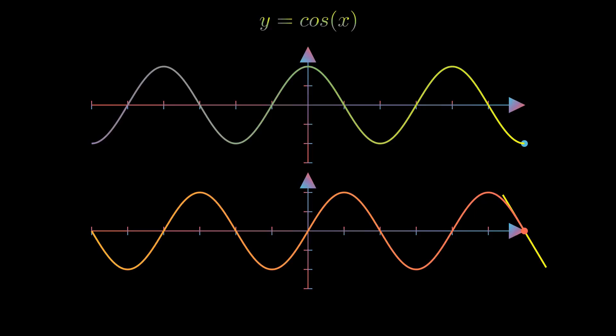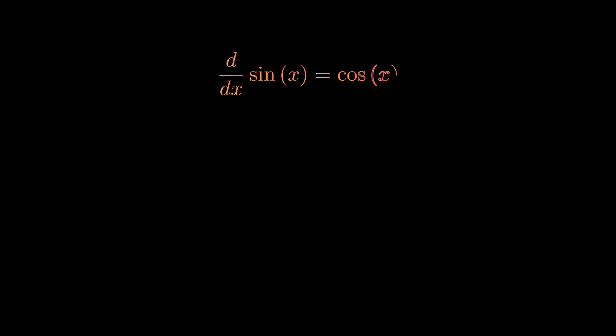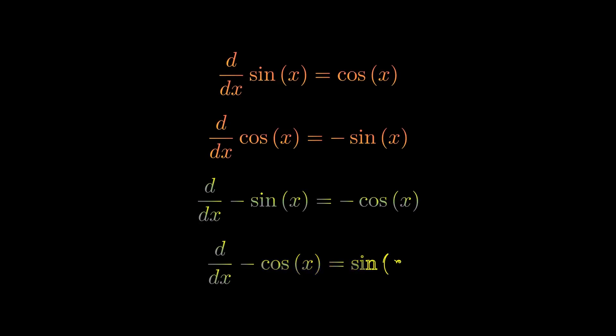I leave it up to you to do the same for the cosine graph and show yourself that it is the same case. The derivative of cosine is negative sine. Going a little further, the derivative of negative sine is going to be negative cosine, and the derivative of that is sine, ending up back where we started. This is a four-step loop, and the fourth derivative of any of these trig functions ends up being itself. This is a fact that will be important later on.